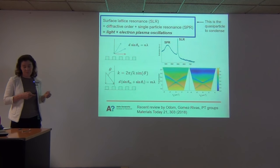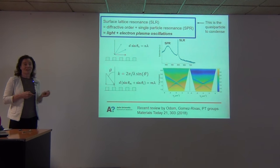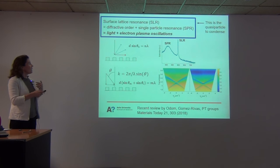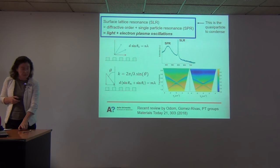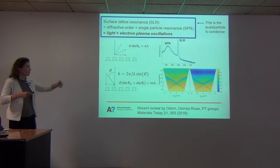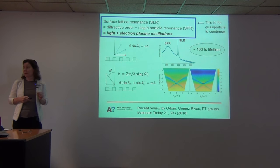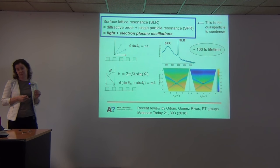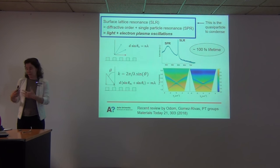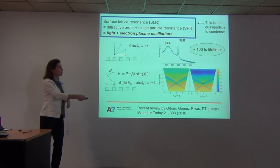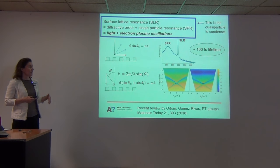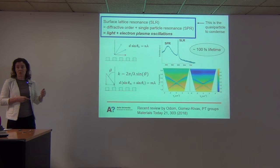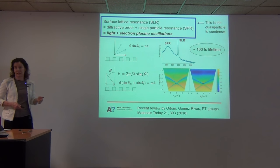Now I'm going to the condensate. The particle we want to condense is this combination of light and electron plasma oscillations — the surface lattice resonance. Since there are not so many condensates around, you might ask: can you just go and condense? Well, there is a problem: these modes have lifetimes of only 100 femtoseconds. So first of all, will any process that puts particles to the ground state be fast enough before everything dies? And second, how are you going to show that you have condensation and not lasing when everything happens so fast?